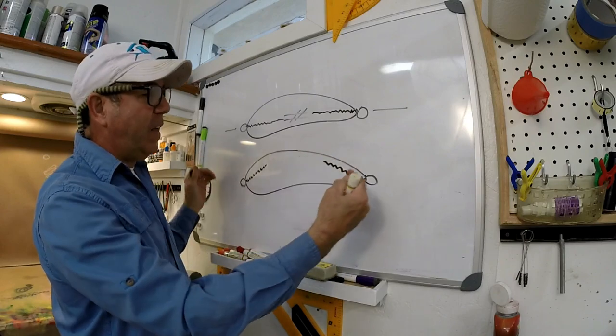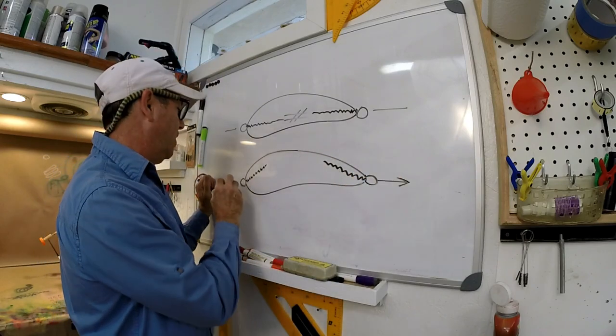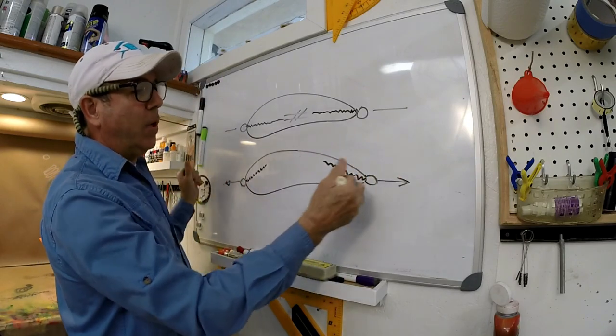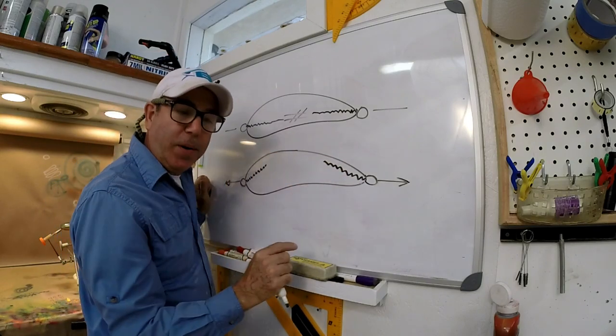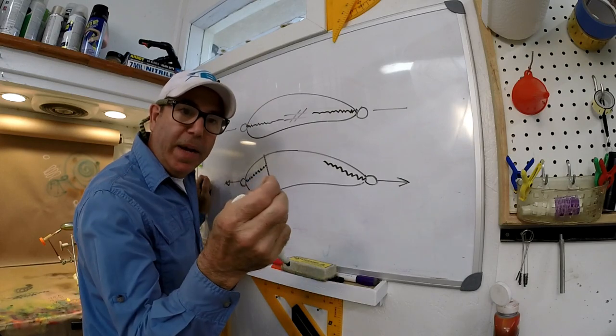What you end up with is an angle offset from each other, and when the load goes on, it's pulling on an angle and it enhances the friction inside the body. This is really important if you use these homemade twist eyes.